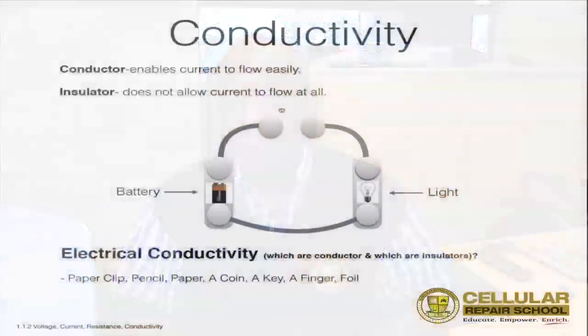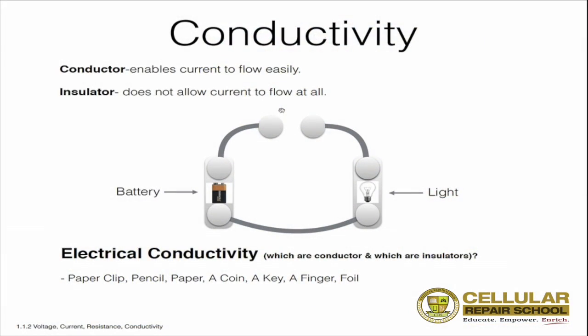Now with electron flow and current flow, and positive and negative charges allowing electrons and current to flow, what we need to understand is when it flows, what exactly does it flow on and how is it done? Well, the word conductivity is something we have to take into consideration. There are two types of vocabulary words from a conductivity standpoint that we want to understand.